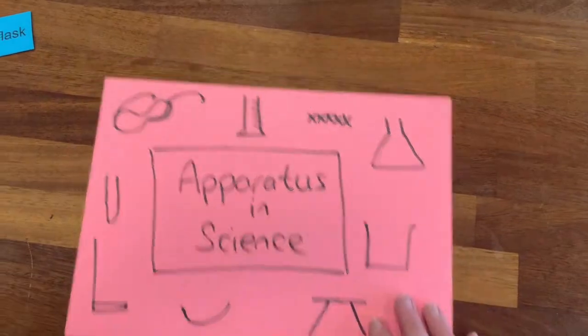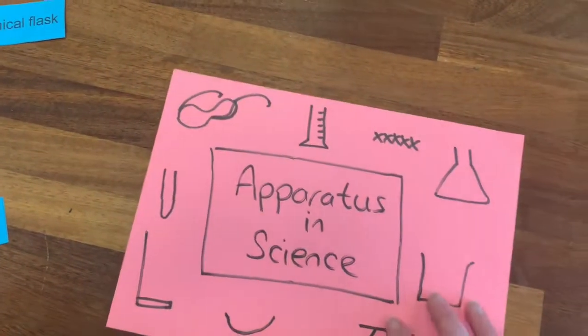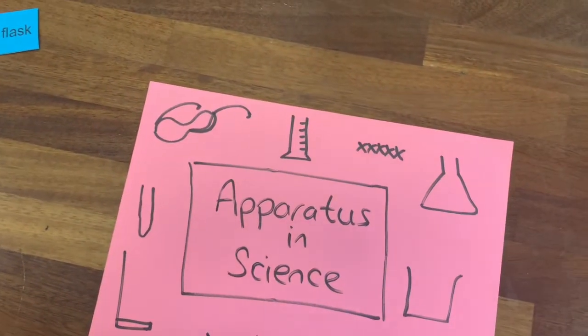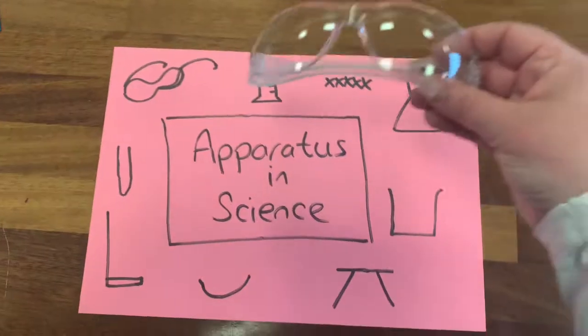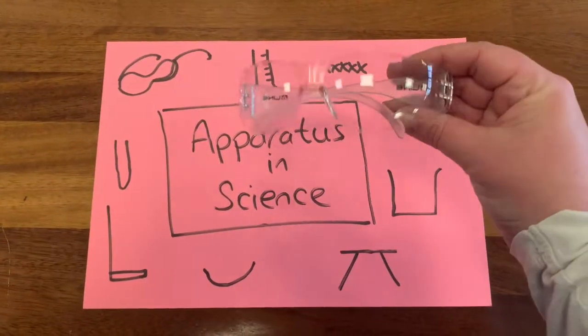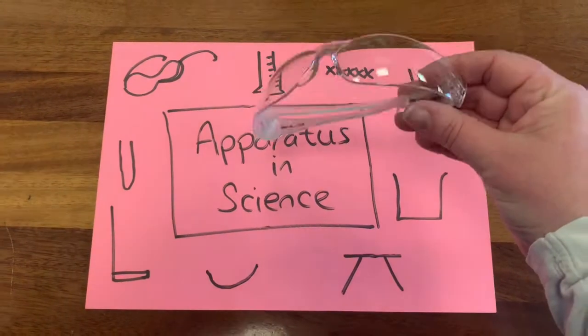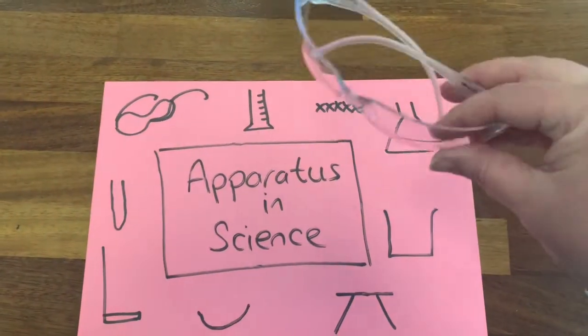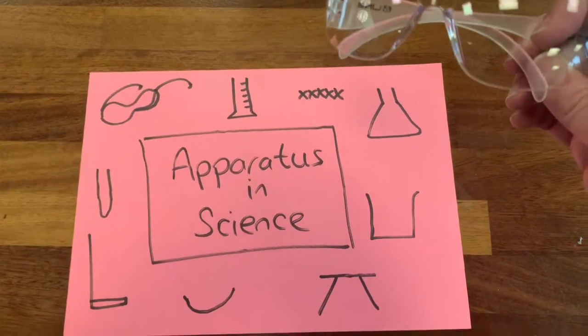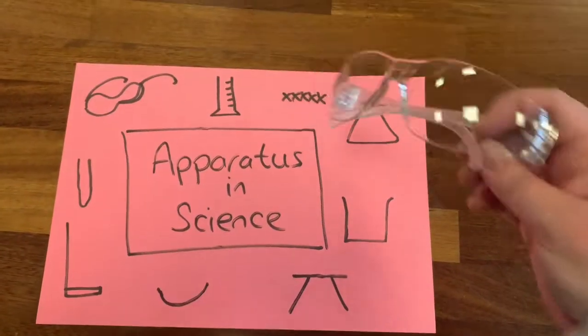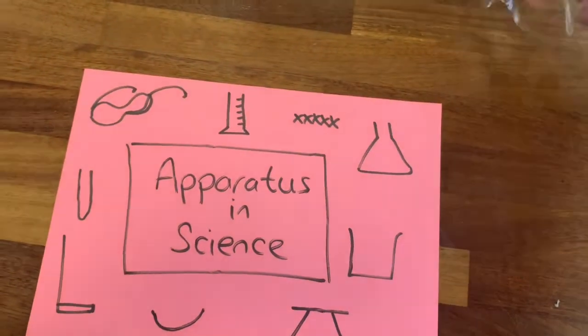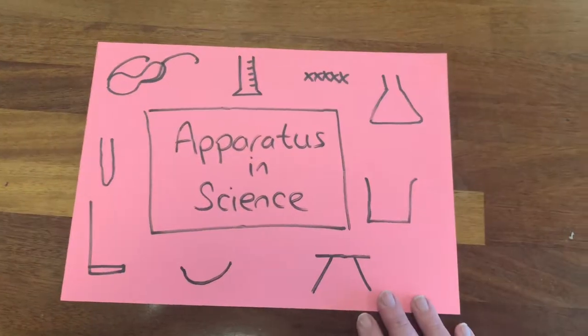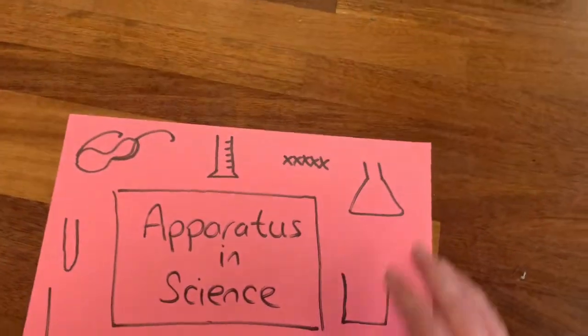We'll start off with one that's not actually on the list of 10 to learn but it's really important — these are your goggles. I've really made a mess trying to draw it but that's what they look like in a diagram. They're really important for practicals, especially if we're using liquids — you have to have your goggles on.